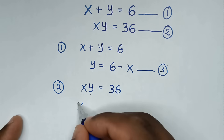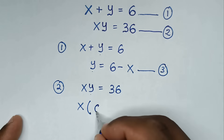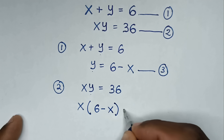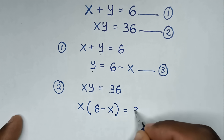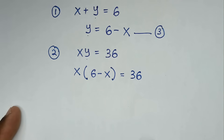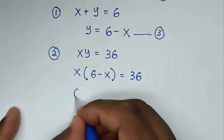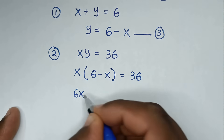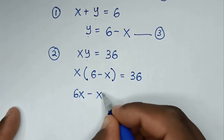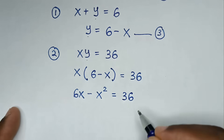So it will be x times bracket 6 minus x bracket, equal to 36. We multiply: x times 6 is 6x, and x times negative x is negative x squared, equal to 36.